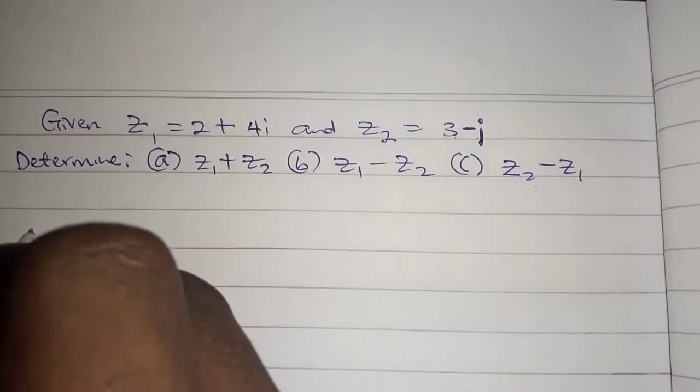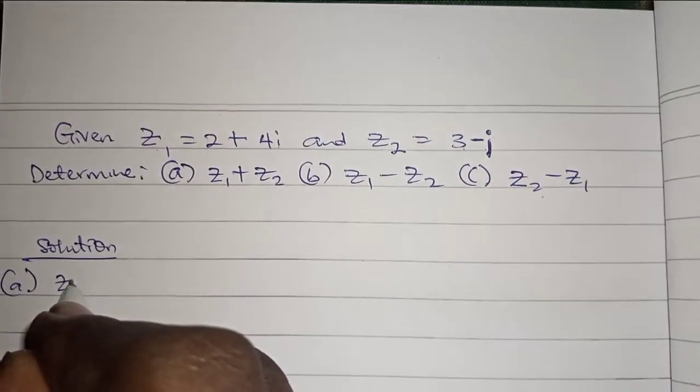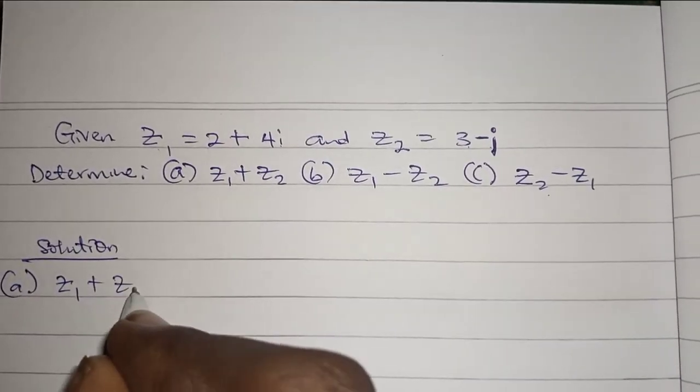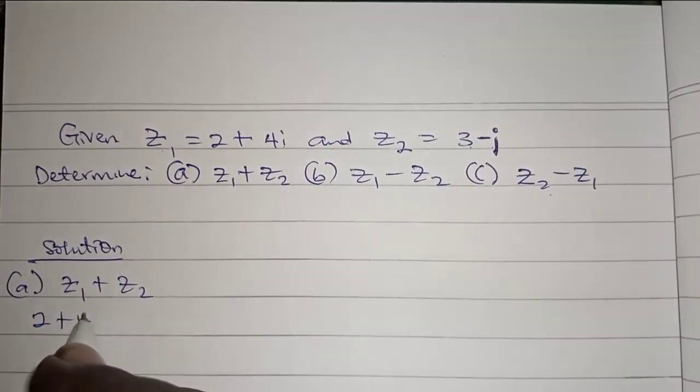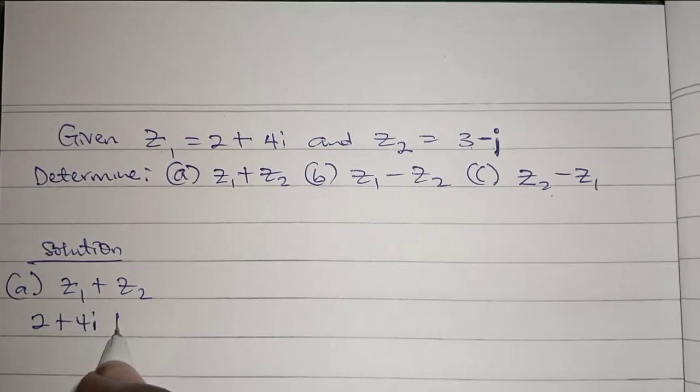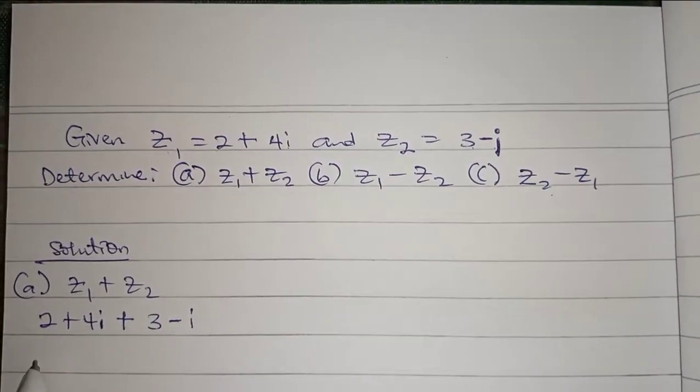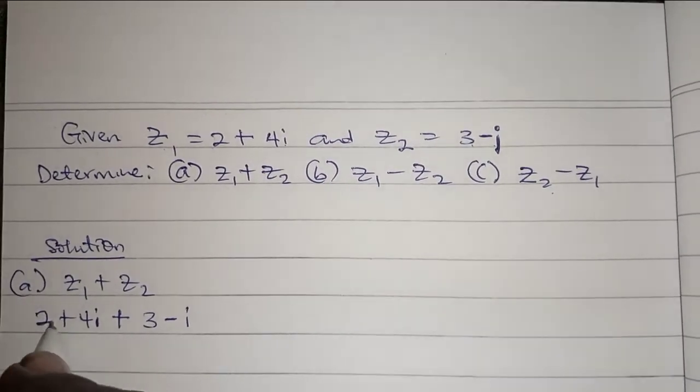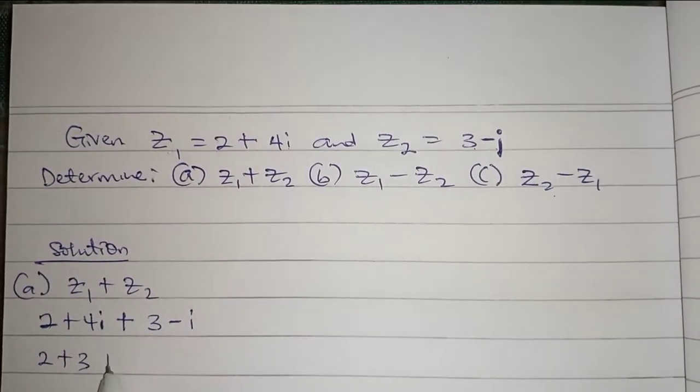We'll be solving this. The first thing, z1 plus z2. So we'll bring them out: z1 is 2 plus 4i plus z2 which is 3 minus i. So we'll just collect like terms. 2 plus 3 which is the real part, then 4i minus i which is the imaginary part.